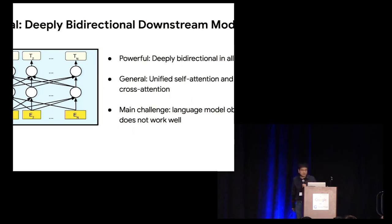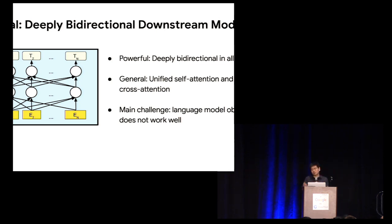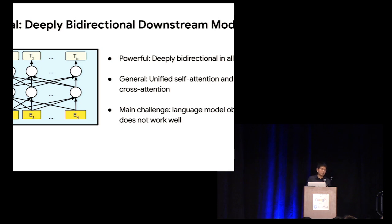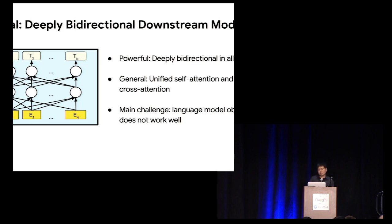We think about what the most powerful and general downstream task model should be, then worry about pre-training. Our goal is to use a deeply bi-directional model as our downstream task model. There are two properties we want: first, it should be powerful — deeply bi-directional in all layers, where the output of every layer is conditioned on both left and right context jointly. Second, it should be general — we reuse the trick from GPT of unifying self-attention and cross-attention by concatenating the inputs together.